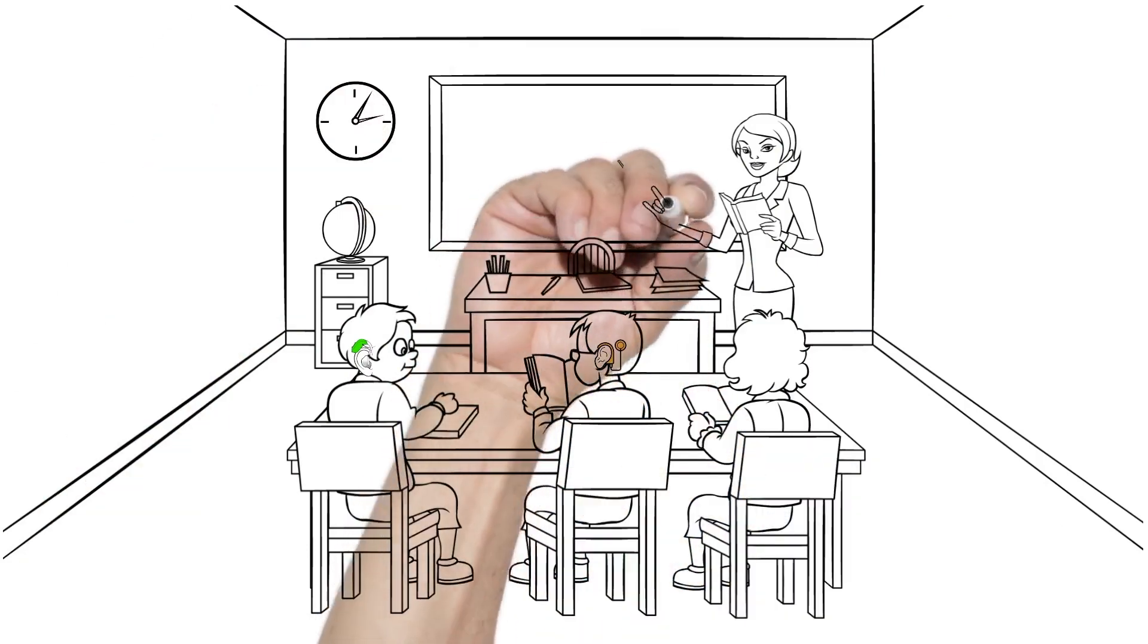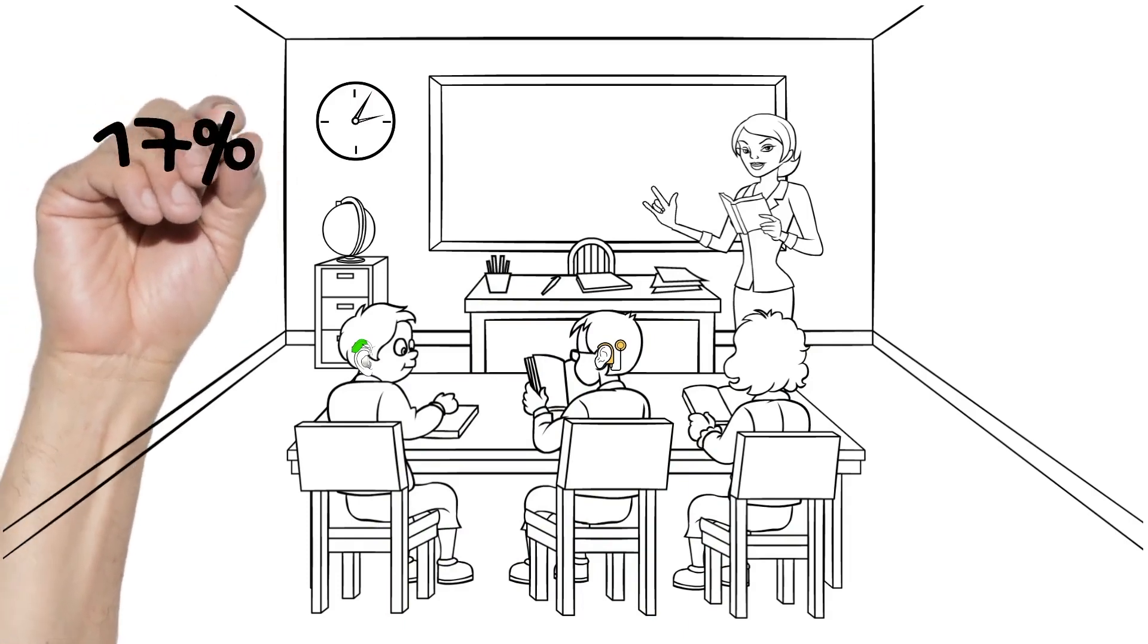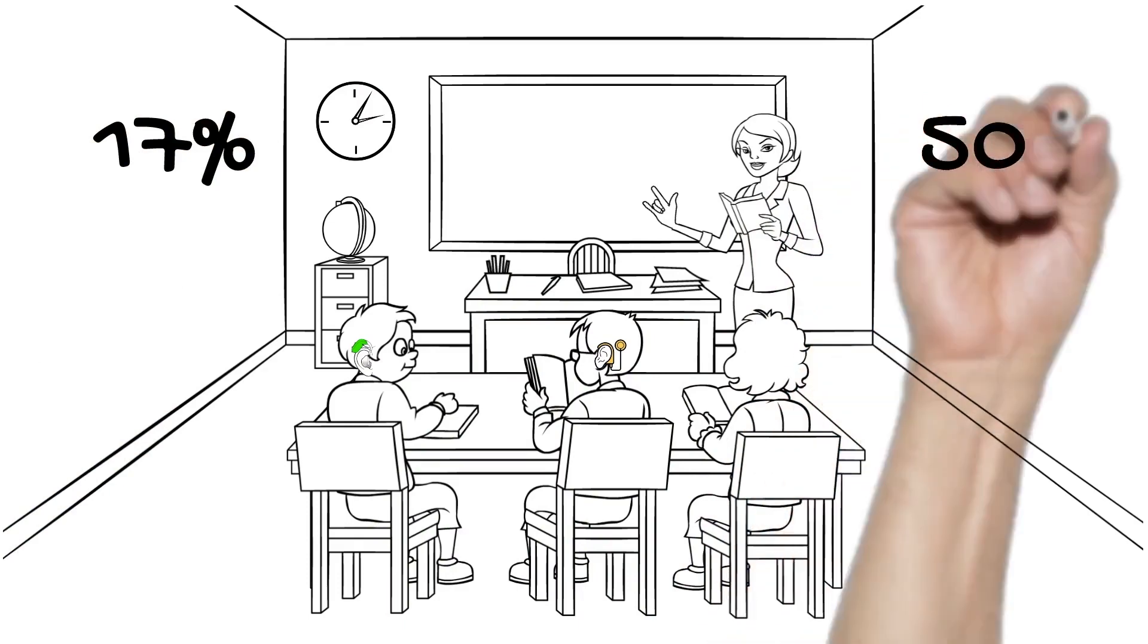In the average Canadian classroom, background noise renders 17% of teacher speech inaudible. By the fourth row of that class, that number becomes 50%.